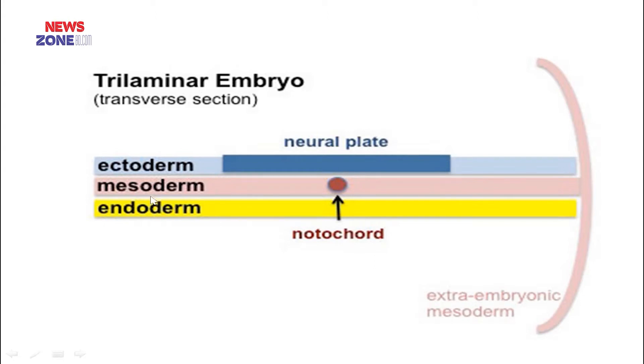The germ layer is the first stage of embryology and these three germ layers are responsible because all the organs in our body are gradually laid down from these three germ layers.